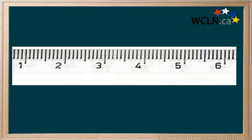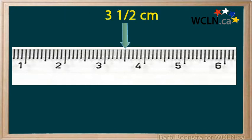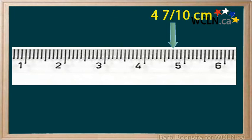Now for the centimeters. Notice that these are divided into tenths. This is one and one tenth. This is two and two tenths, which would be written as two and one fifth. Three and five tenths would be written as three and a half. This is four and seven tenths.